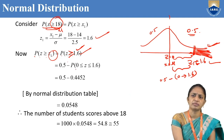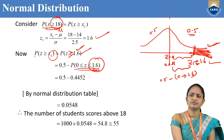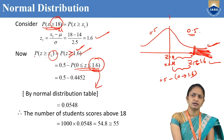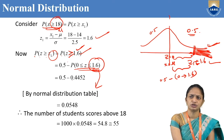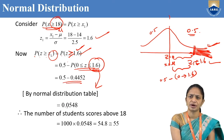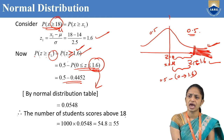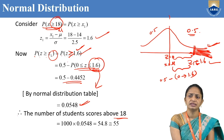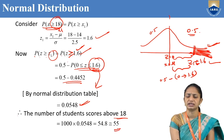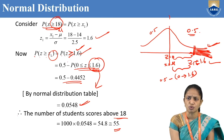That is 0.5 minus the area from 0 to 1.6. From the normal distribution table, the value at 1.6 is 0.4452. After simplification: 0.5 minus 0.4452 equals 0.0548. Therefore, the number of students scoring above 18 is 1000 into 0.0548, which equals 54.8, approximately 55 students.